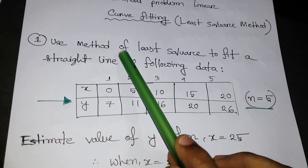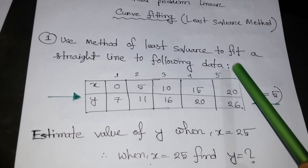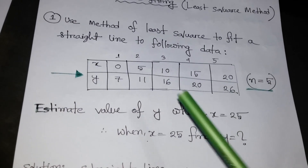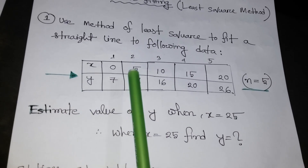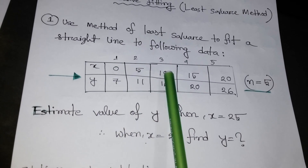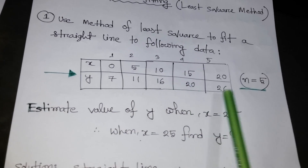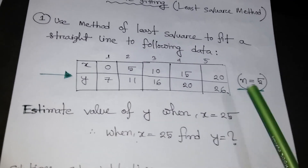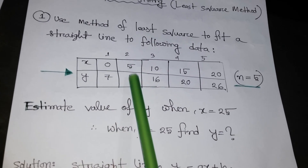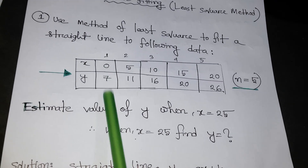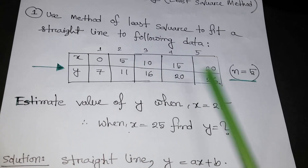The problem says: use the method of least squares to fit a straight line to the following data. You are given X values 0, 5, 10, 15, 20 and Y values 7, 11, 16, 20, and 26. That means n equals 5, because there are five pairs.